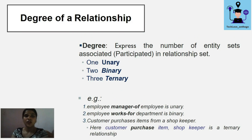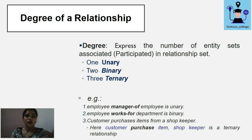So let's start with degree of relationship. The degree expresses the number of entity sets associated or participating in a relationship set. Commonly, a relationship of degree one is known as a unary relationship, degree two is a binary relationship, and degree three is a ternary relationship.